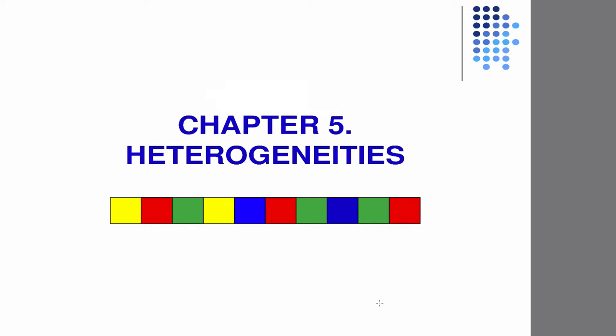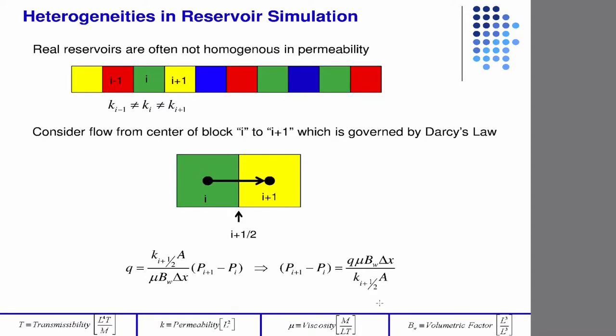And there's also a case where you could have non-constant other material properties like viscosity, and that's covered as well. So this is really just talking about the heterogeneity and permeability and how the flow vector is the same, but we can evaluate the flux at the half boundary.